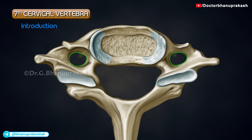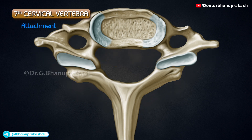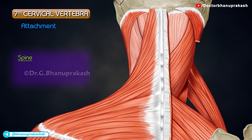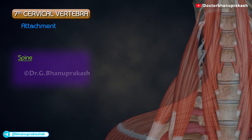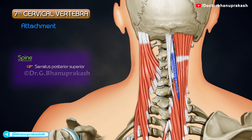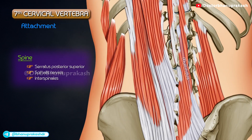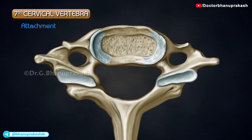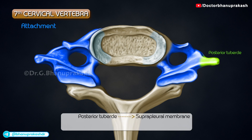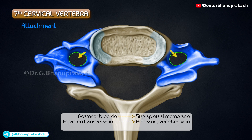The foramen transversarium does not transmit the vertebral artery. The tip of the spine provides attachment to the ligamentum nuchae, trapezius, rhomboid minor, serratus posterior superior, splenius capitis, semispinalis thoracis, spinalis cervicis, interspinalis, and multifidus. The posterior tubercle of the transverse process provides attachment to the supraplural membrane, and the foramen transversarium transmits only the accessory vertebral vein.